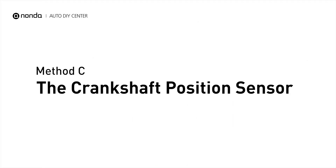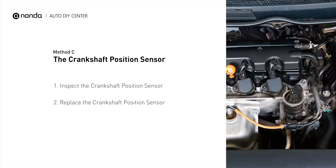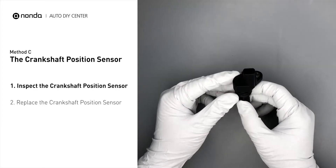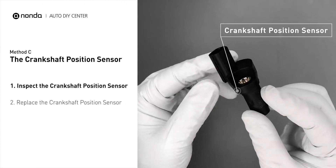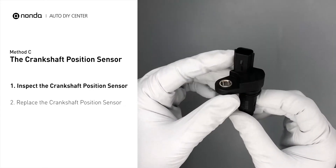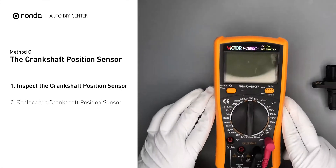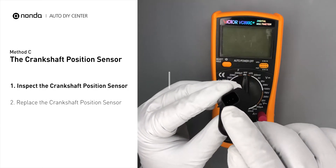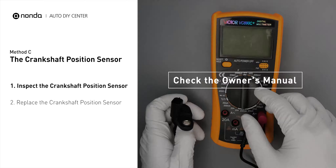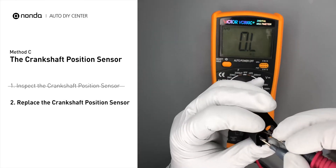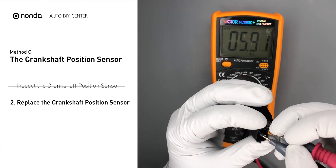Method C – The Camshaft Position Sensor. The camshaft position sensor is located in the valve cover near the top of the engine, or it can be located at the front or rear of the cylinder head. First, carefully remove the camshaft position sensor from the vehicle. Visually inspect the sensor to make sure it hasn't been contaminated by a leak from another engine component. Use a multimeter to test the camshaft position sensor. Check your owner's manual to see the specific camshaft position sensor resistance range for your vehicle. If you do not get a reading, this indicates that the camshaft position sensor is faulty and needs to be replaced.